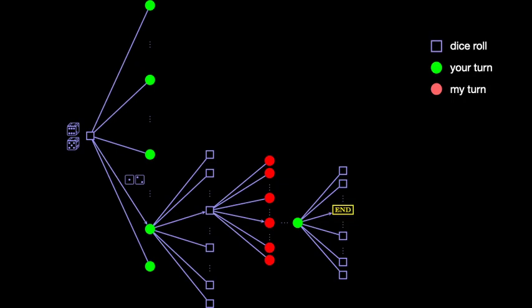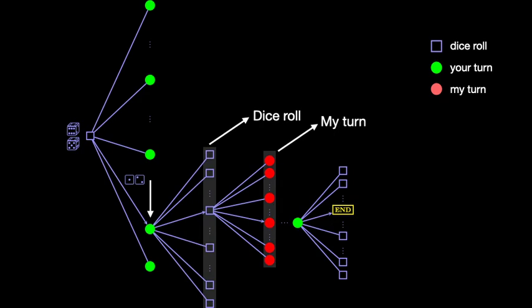The full game is too complicated to show here, but suppose that you rolled one two and played your move, represented by an edge emanating from the green circle. Then I roll the dice, and depending on its outcome, I make a move, represented by a red circle. We continue taking turns until the game ends.